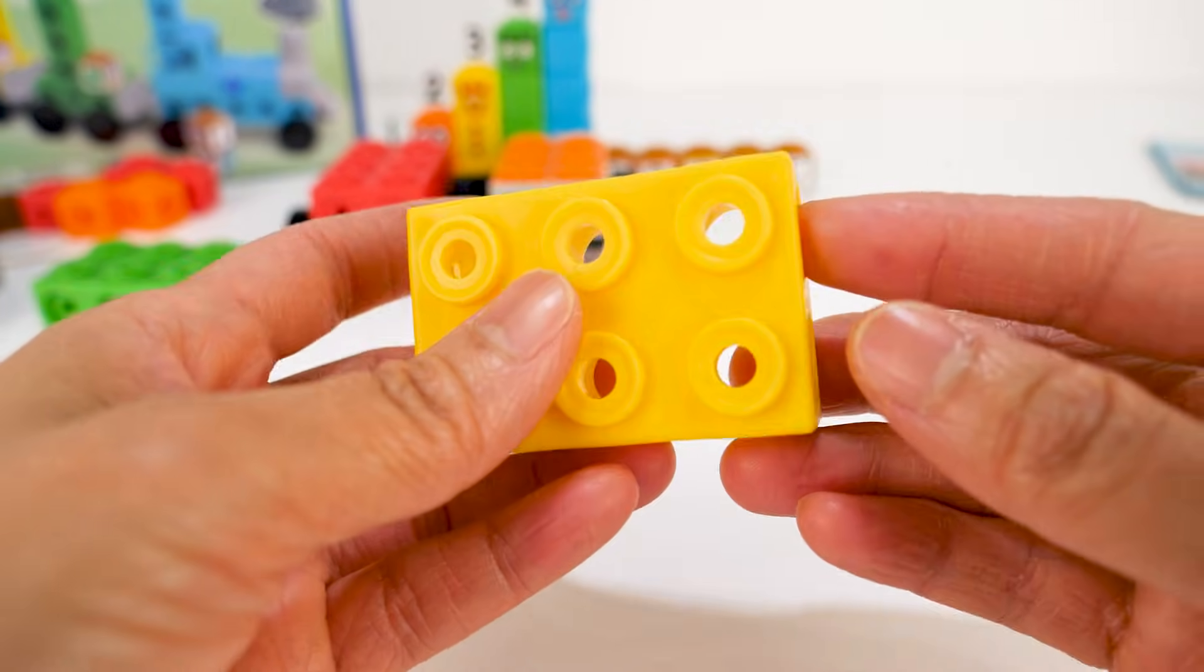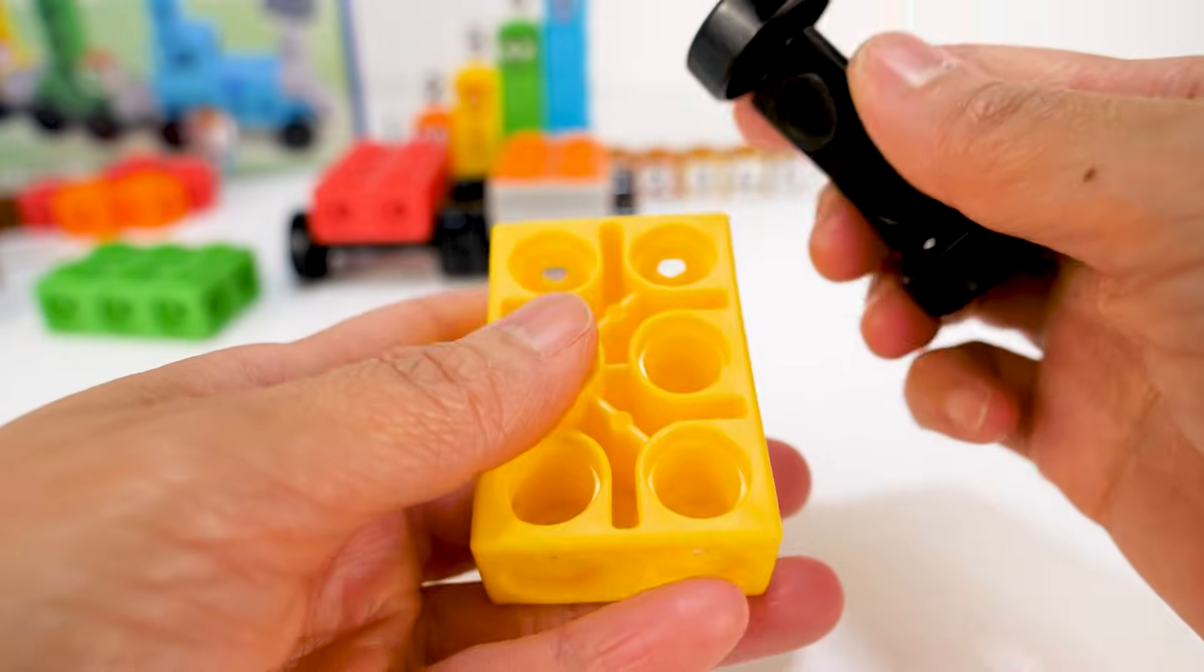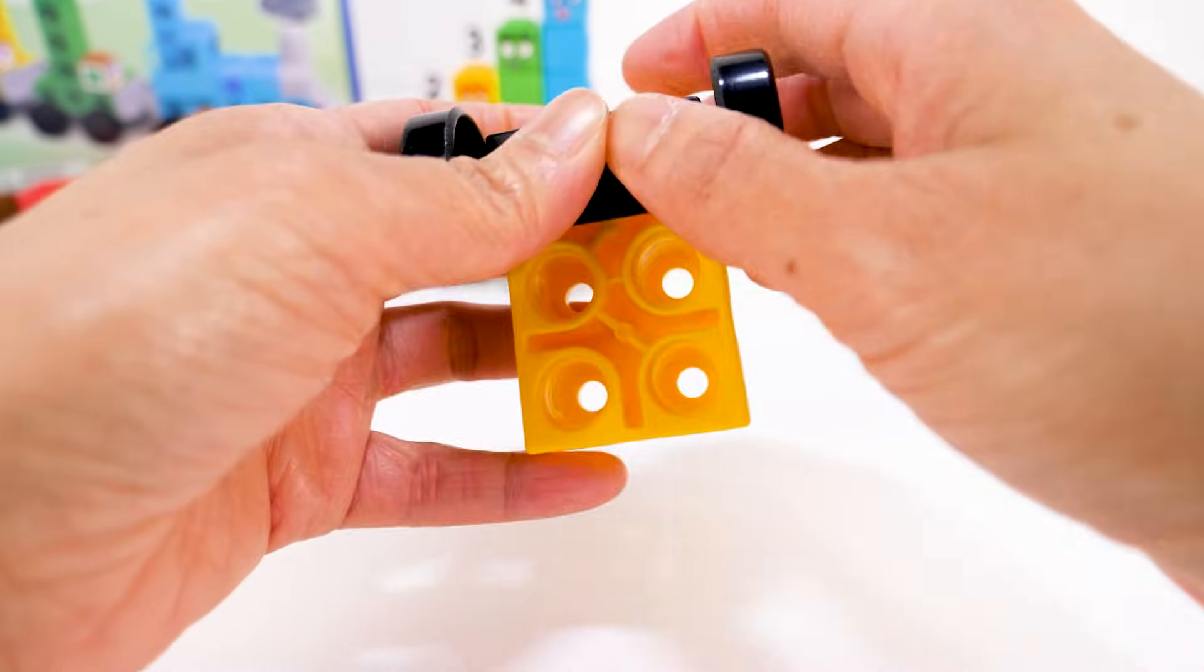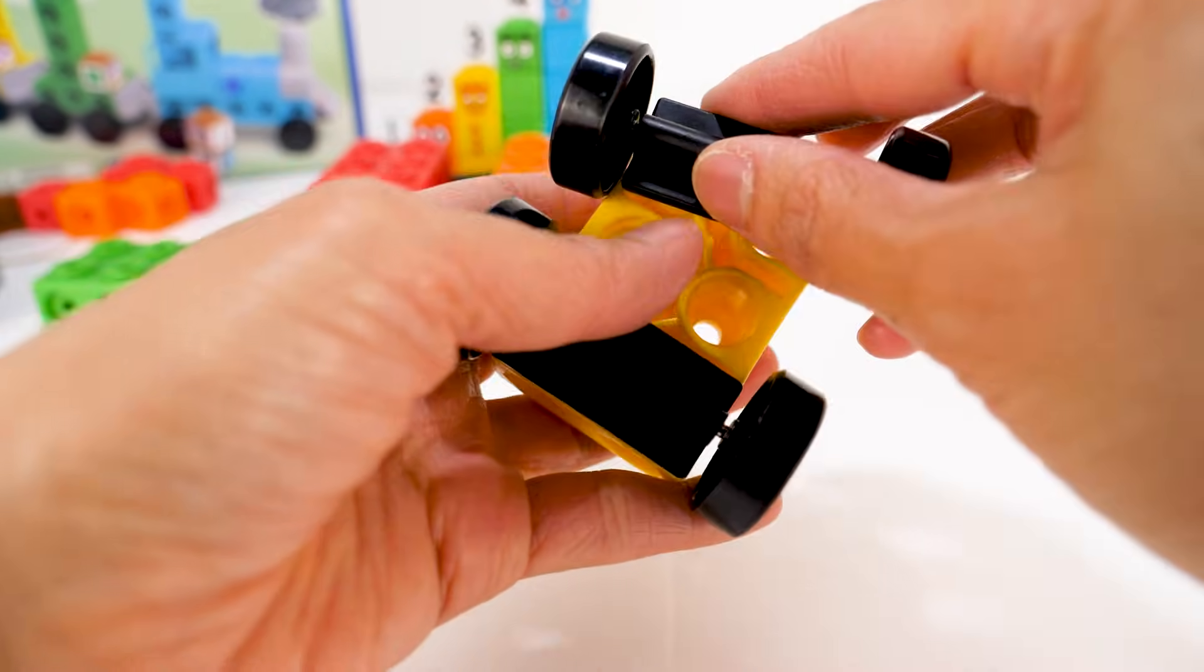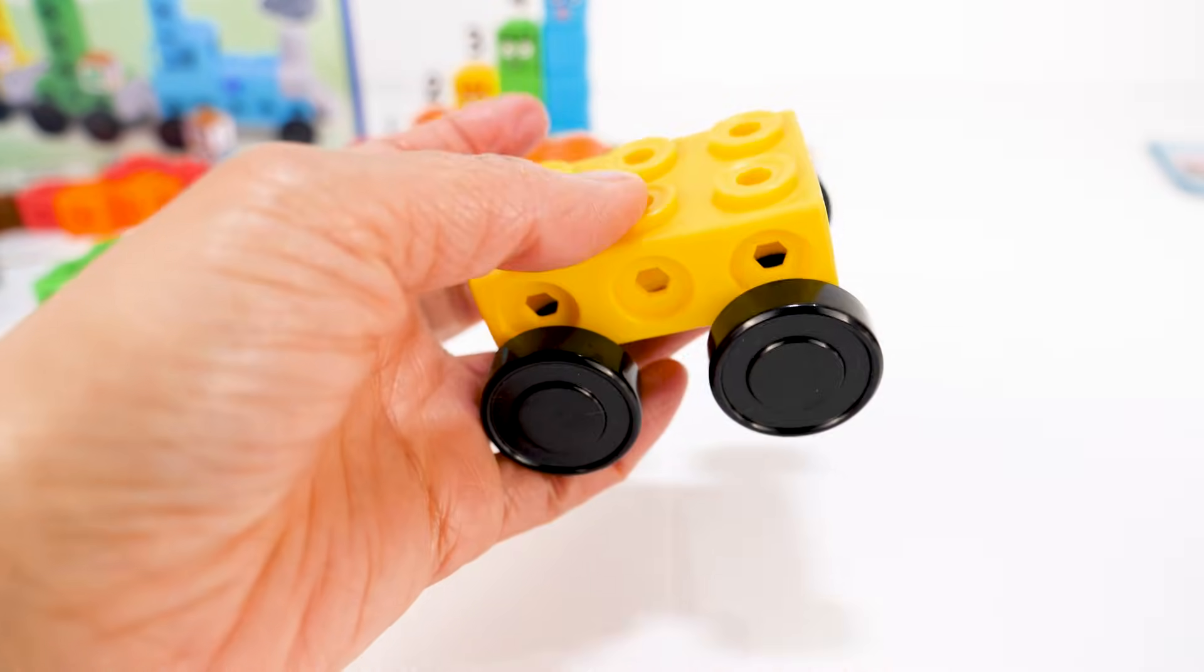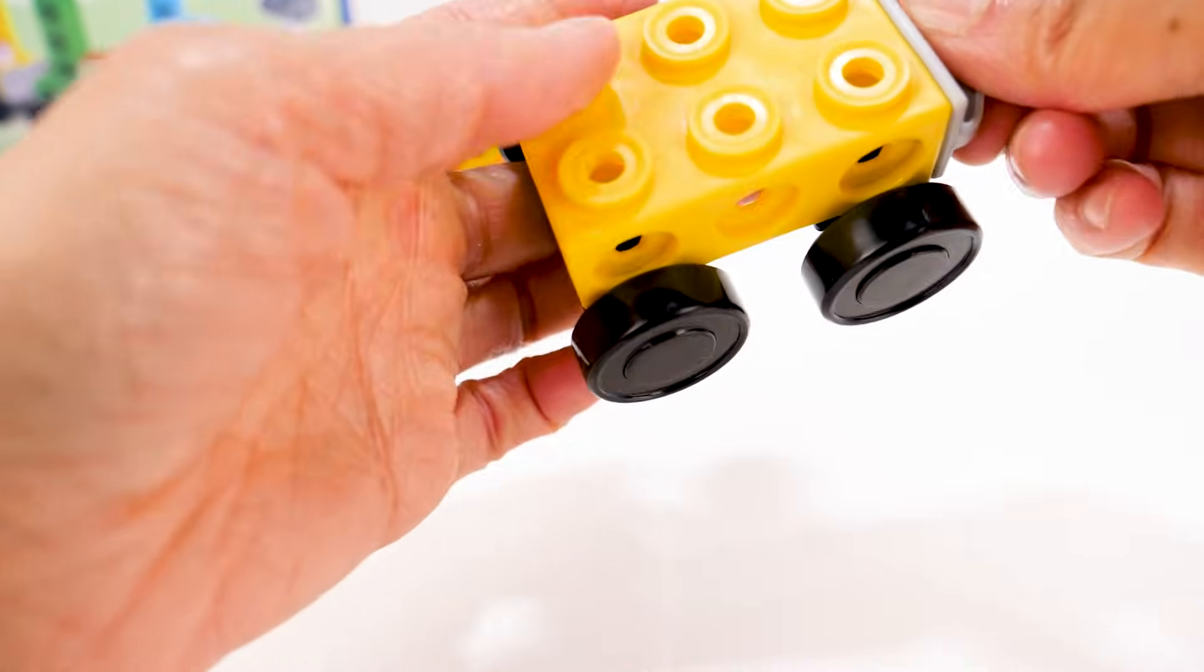Time for the yellow train car. The wheels, then the front and back connectors.